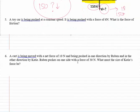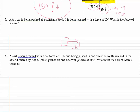For number five we have a toy car that is being pushed at a constant speed. It's being pushed with a force of 6 newtons. What's the force of friction? So here's our toy car. It's being pushed at a constant speed, so that means that whatever the push is has to be the same as friction, because constant speed is a balanced diagram.